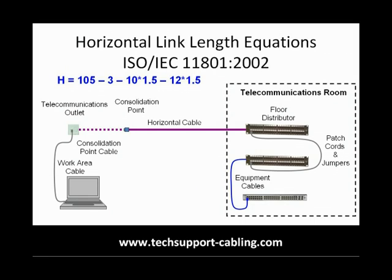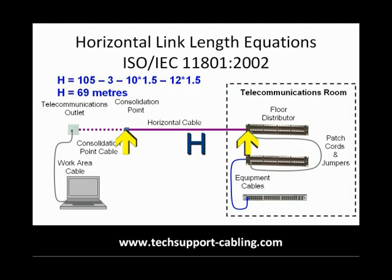H, which remember is the maximum permissible horizontal cable length, equals 105 minus 3, which is 102, minus 15, which is 87, minus 18 — giving us a length for H of 69 metres.